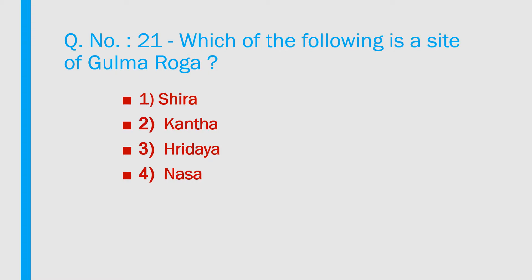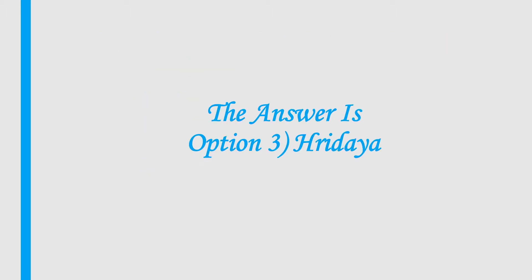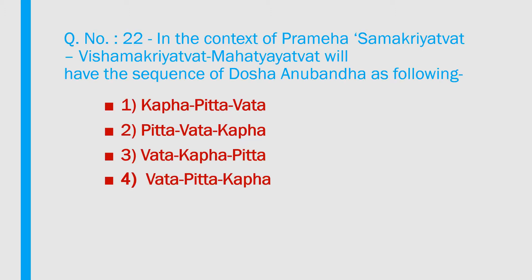Question number 21: Which of the following is the site of kulpa doga? Options: 1) Shida, 2) Kanda, 3) Hrudaya, 4) Nasa. Answer is option 3, Hrudaya.